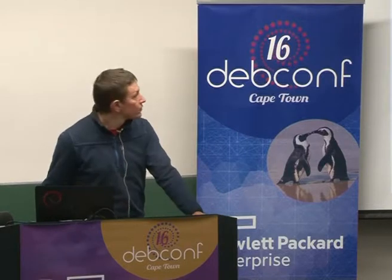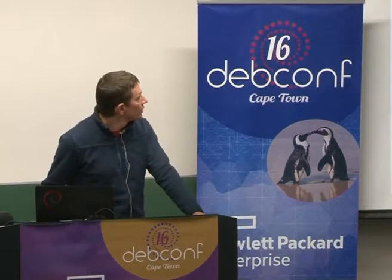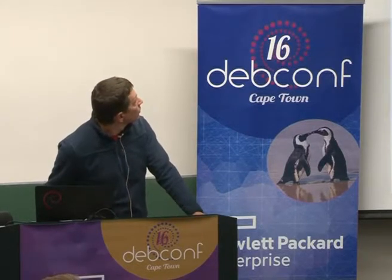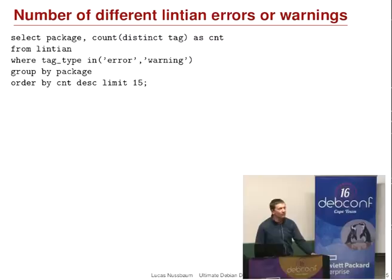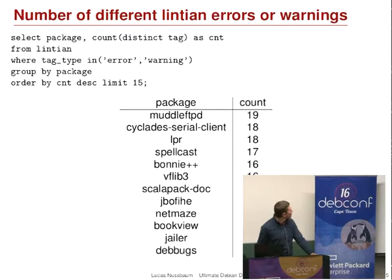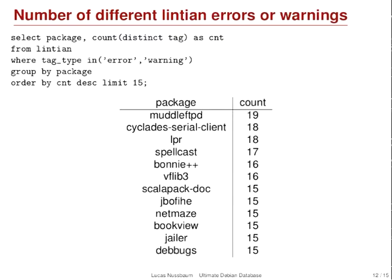So what can we find out about Debian using UDD? One example query is the number of different Lintian errors or warnings — specifically the packages with the highest number of different errors or warnings. Those are good examples to stress test Lintian.